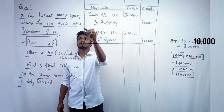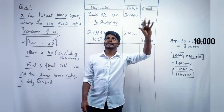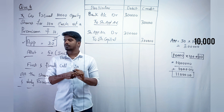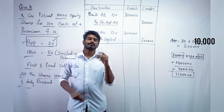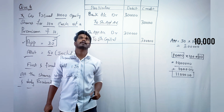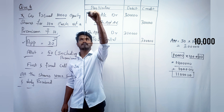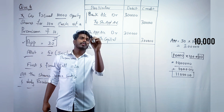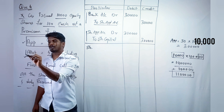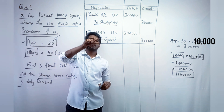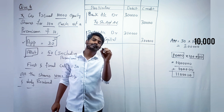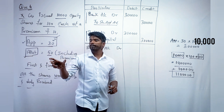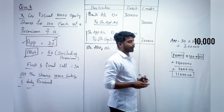For the application we made two entries, and for allotment there are two entries as well. For allotment, we write the due entry first and the bank entry second — I will explain why. Share allotment account debit. In allotment we also have premium, so we need to account for that.